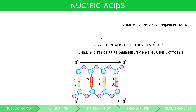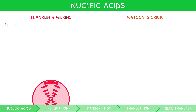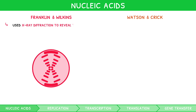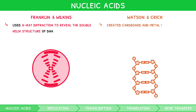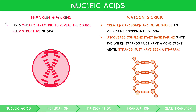But who discovered this information? Franklin and Wilkins, and Watson and Crick. Franklin and Wilkins used X-ray diffraction to reveal the double helix structure of DNA. Watson and Crick then used this information to create cardboard and metal shapes to represent the components of DNA. Through trial and error, they uncovered complementary base pairing, since the joined strands must have a consistent width. From here, they theorised the strands must have been antiparallel.